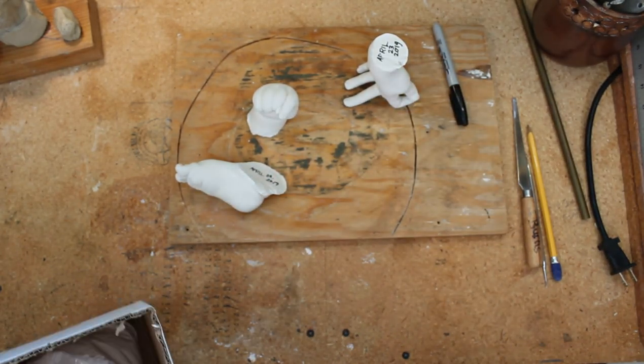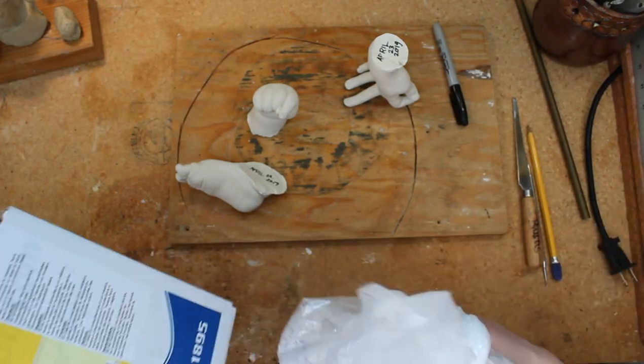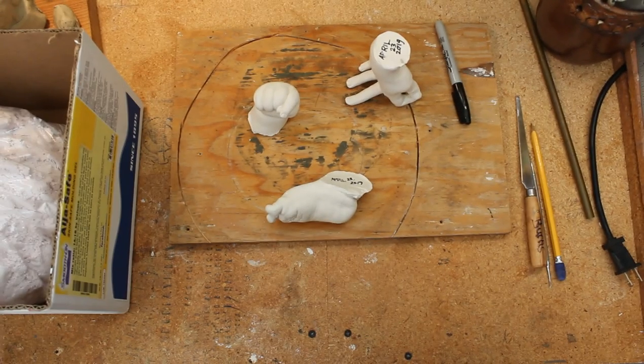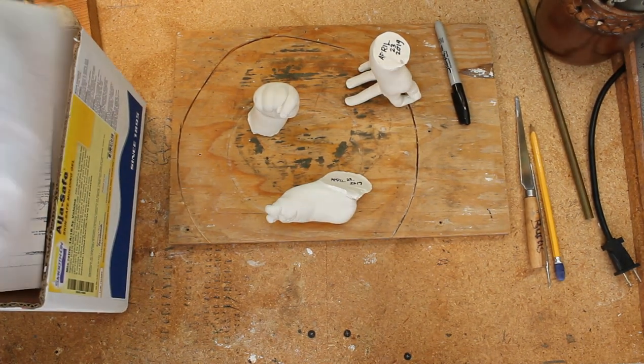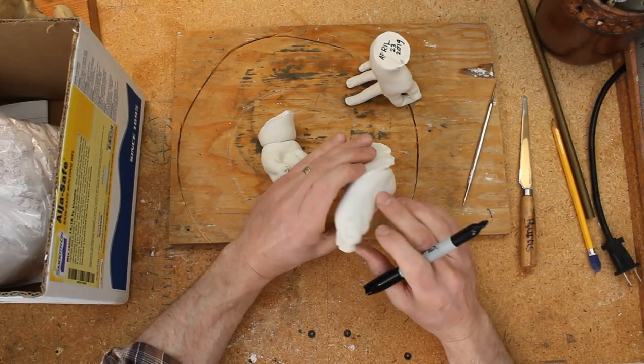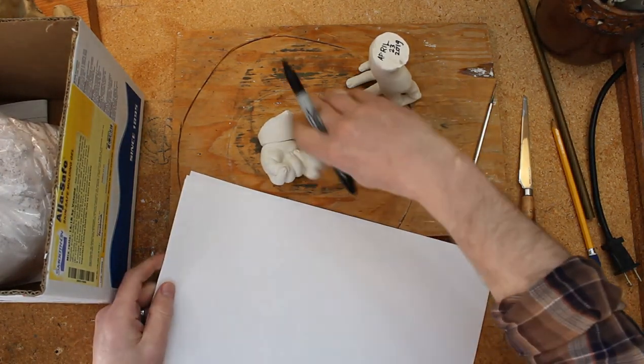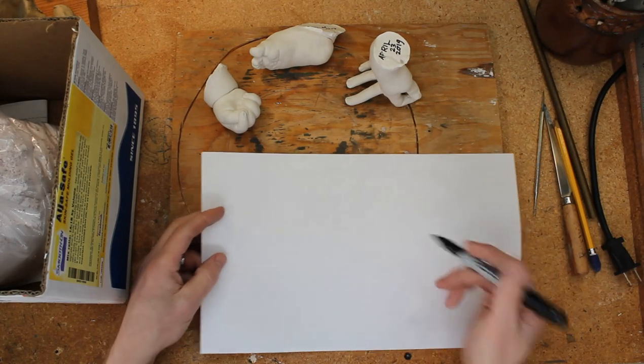So I made these using a product called AlgaeSafe. This is from a company called Smooth-On. I'll put a link in the description if you're interested in purchasing it. One-to-one ratio you mix with water, you can make a disposable one-use mold. You can cast plaster in that mold or other various materials.